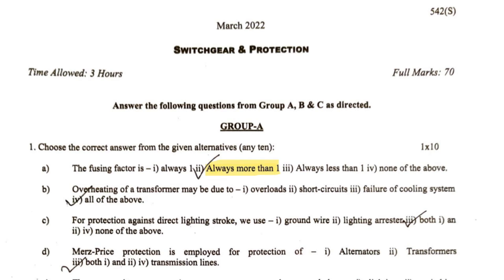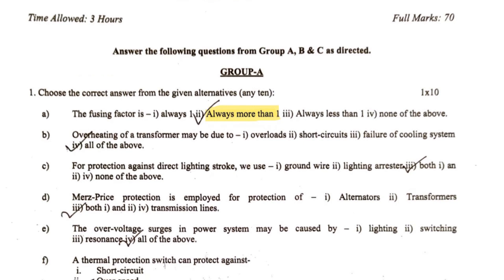The next question: overheating of a transformer may be due to what? Options are overload, short circuits, failure of the cooling system, all of the above. Overload means the current is above the normal rated value flowing for a certain time. Short circuit is when the current increases abnormally to a very high value. Failure of the cooling system means the system cooling the transformer has failed. In any of these cases, the transformer temperature will rise, so all of the above is correct — option four.